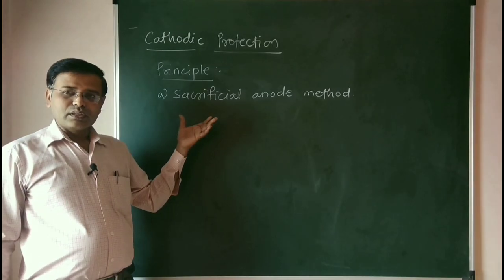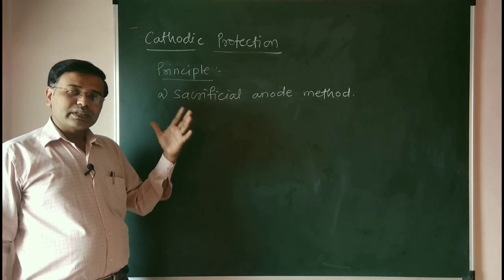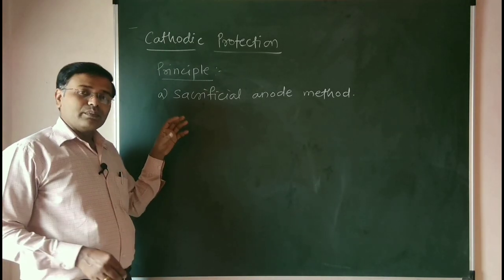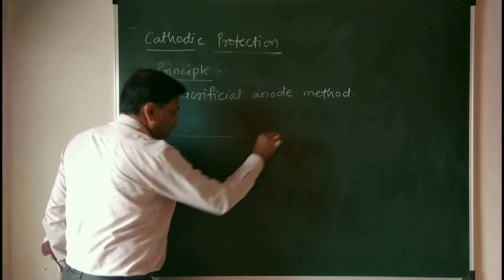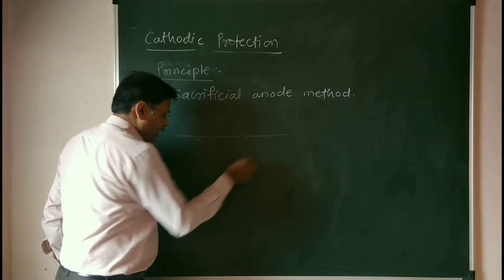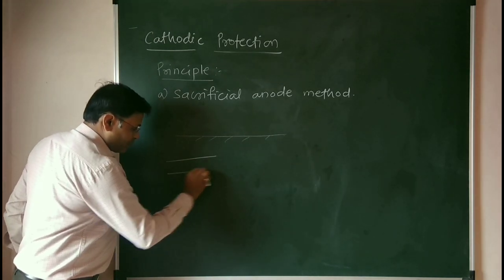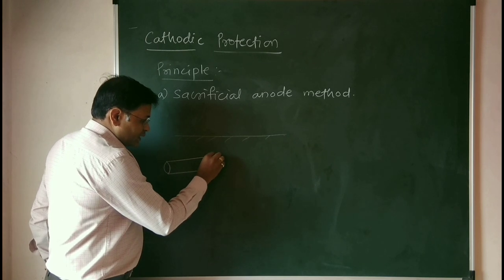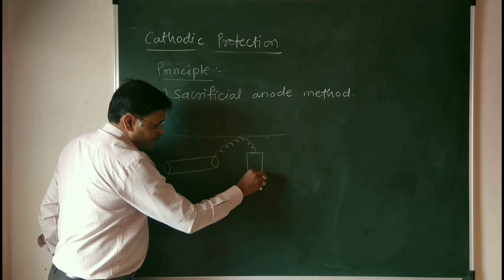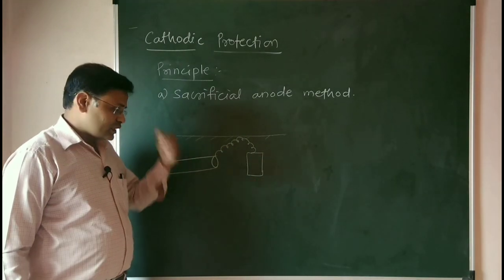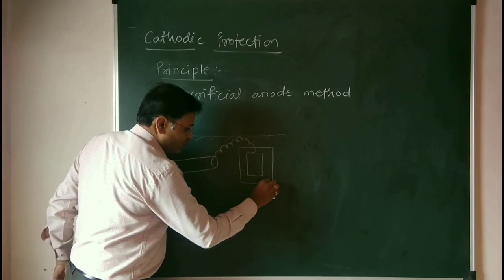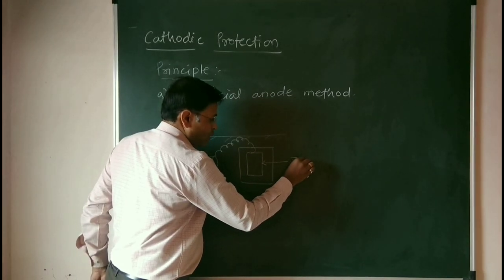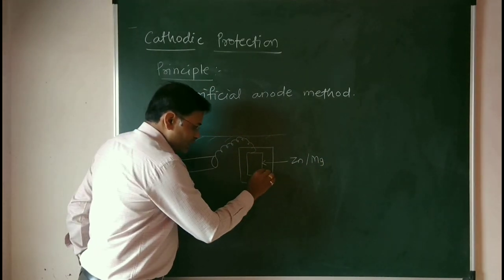The name itself implies sacrificial anode. Here, the upper-placed metals in the galvanic series — like magnesium, zinc, and aluminium — are connected with the metal to be protected. For example, consider a ground surface with a pipeline that needs protection from corrosion. The metal to be protected is connected with these highly active, highly reactive metals, which are placed in a backfill for better electrical contact. The backfill is made up of sodium chloride, coal, etc.